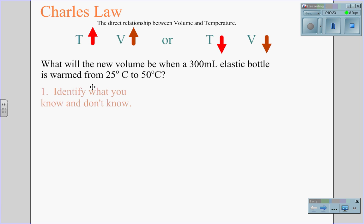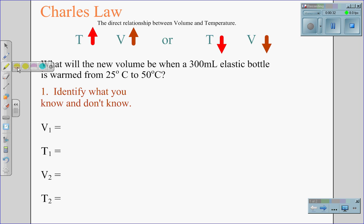Identify what you know and what you don't know. We are looking for V1, T1, V2, and T2. In reading the problem, we identify the first volume to be 300 milliliters. We identify our first temperature as 25 degrees Celsius and our second temperature to be 50 degrees Celsius.